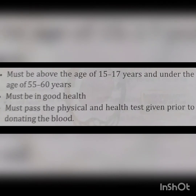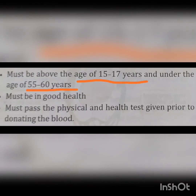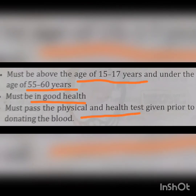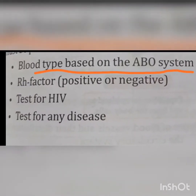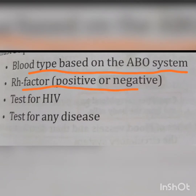The following conditions are necessary for a person to donate blood. The person must be above the age of 15 to 17 years and under the age of 55 to 60 years. The donor must pass the physical and health tests given prior to donating. Before donating, certain tests must be performed, such as the blood type based on the ABO system (A, B, AB or O), the RH factor (positive or negative), a test for HIV, and a test for any other type of disease.